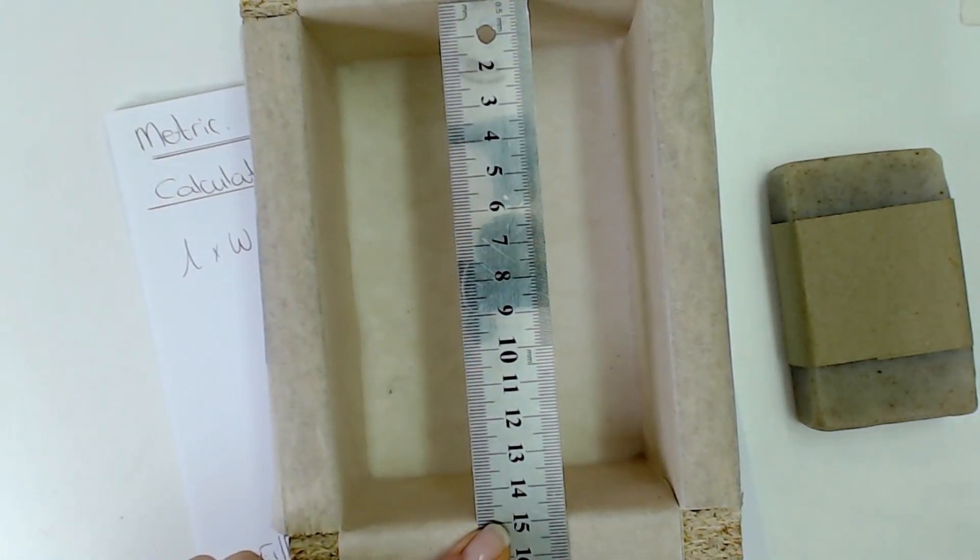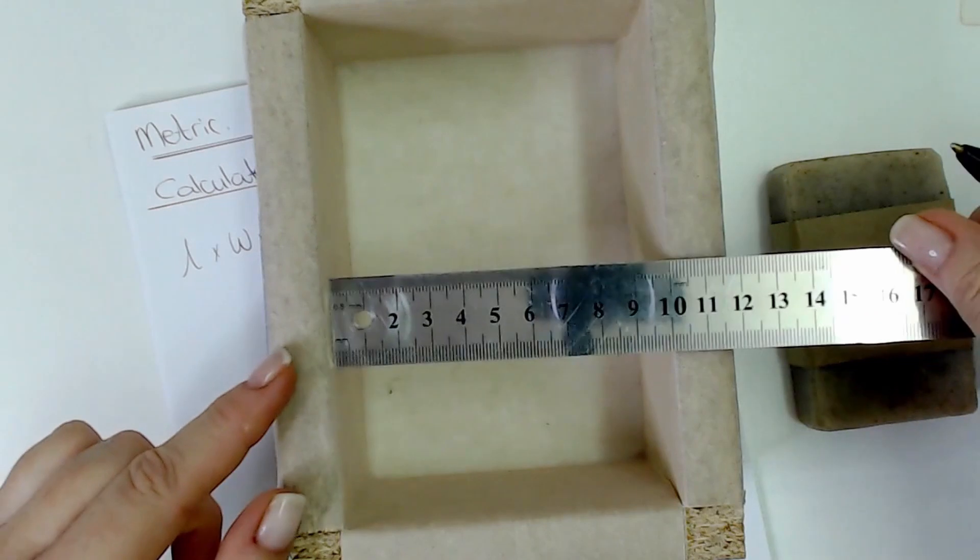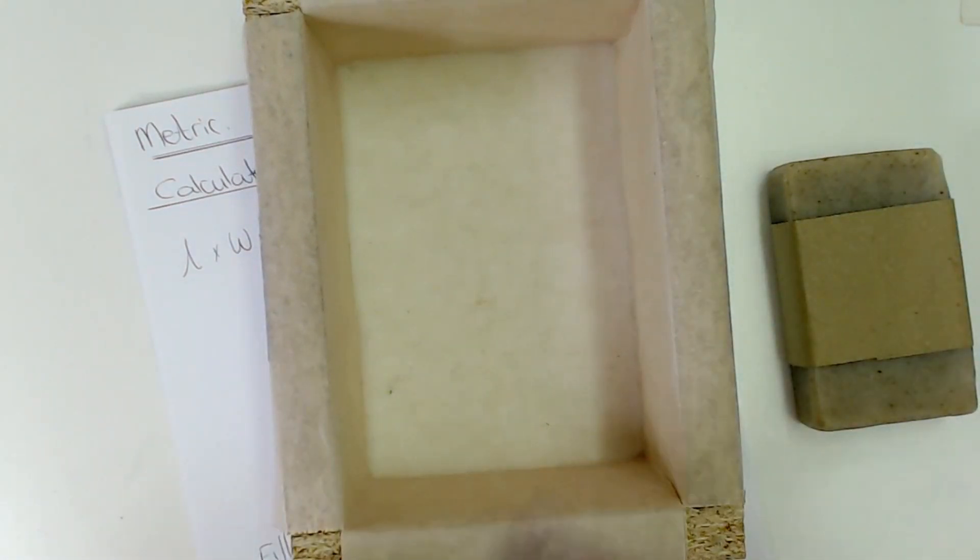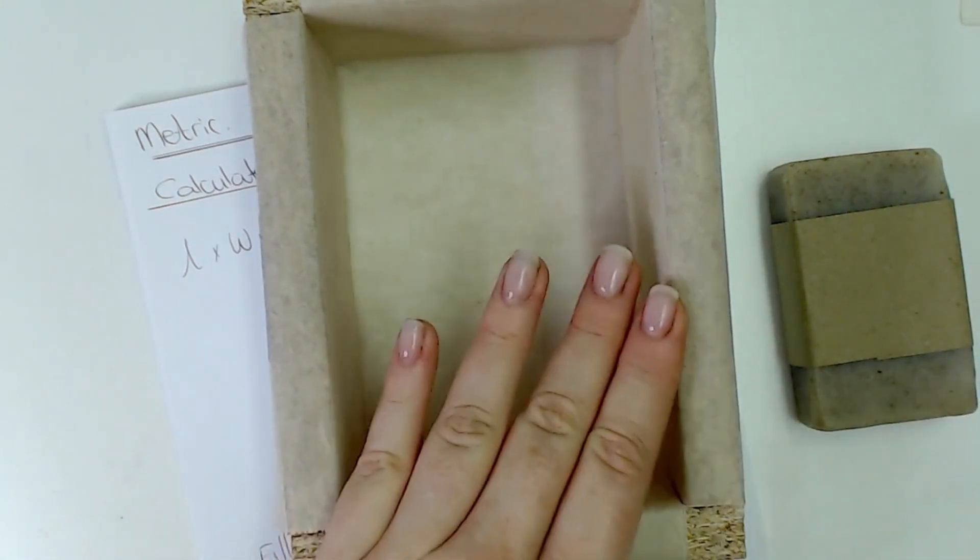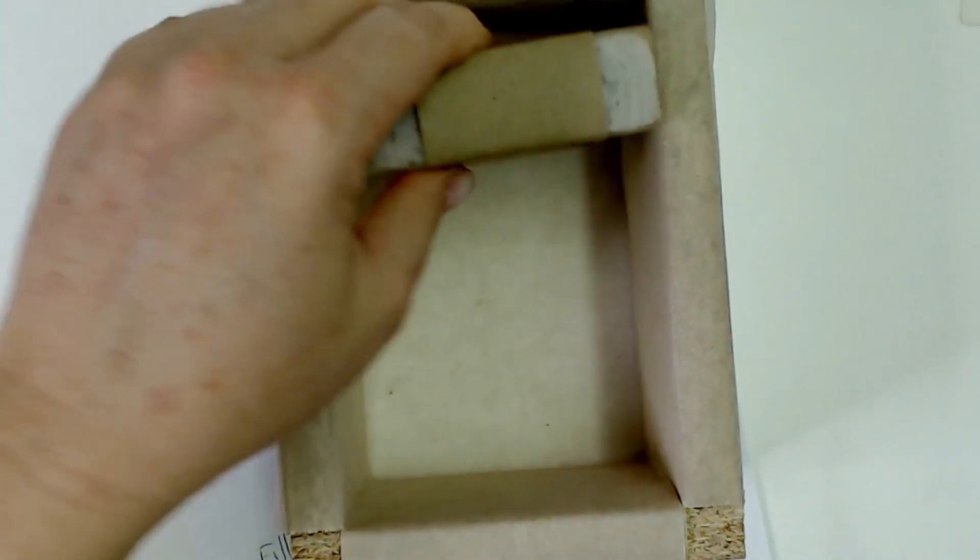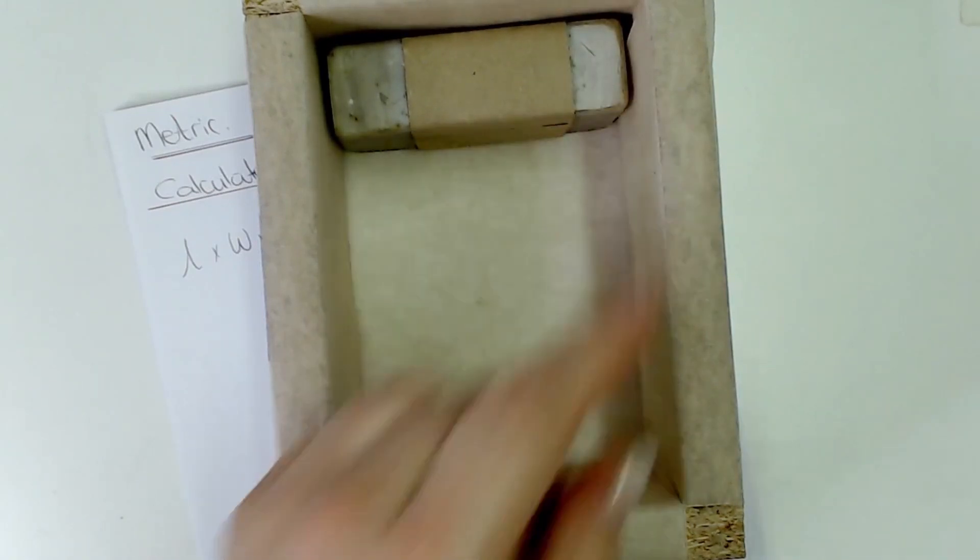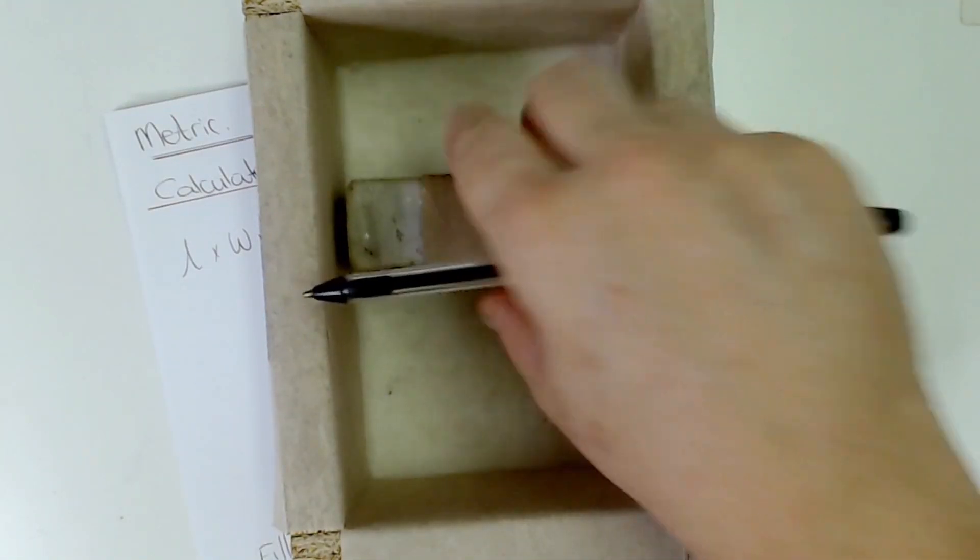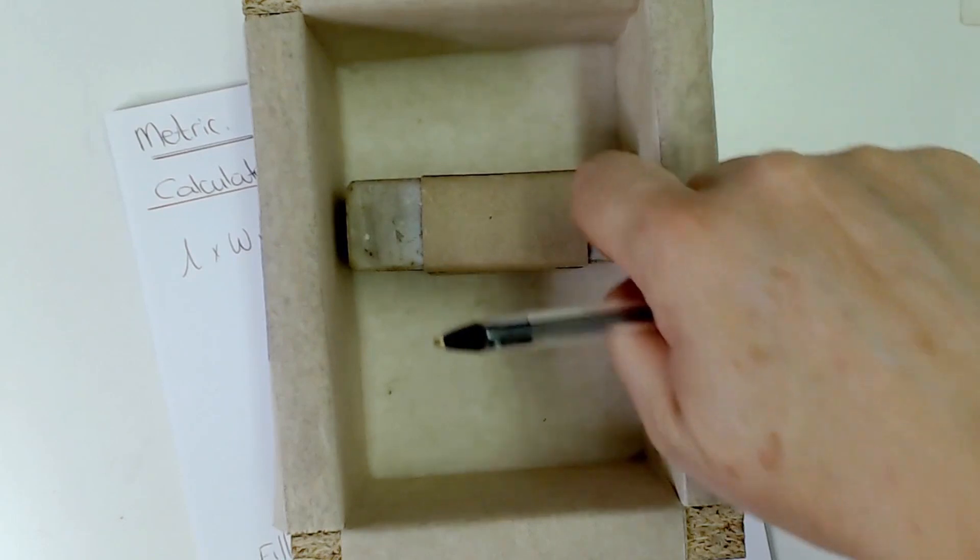So we've got 15 centimeters here, then the width is going to be 10 centimeters, and then the height is going to depend on how full you want to make your mold. This is about the size of my bar of soap so I'm not going to fill it all the way up to the top. So I'm going to leave some head space here.